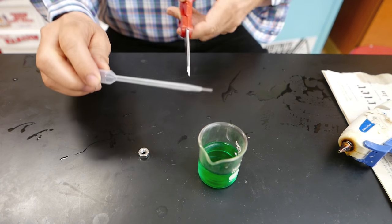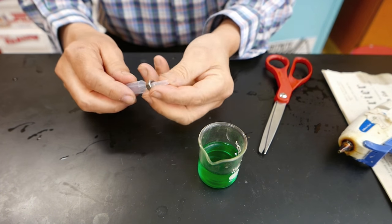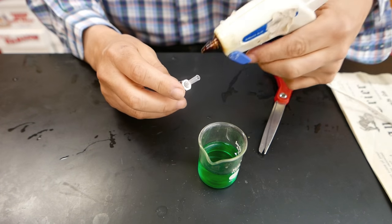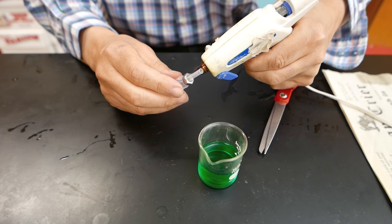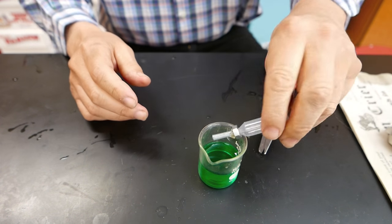This next diver is made with a plastic dropper, and it's going to be a little bit more permanent. I'll cut part of the stem off, add this nut here for ballast. It's going to be held there by hot glue. There we go. Now I'm going to add just enough water so that it barely floats.